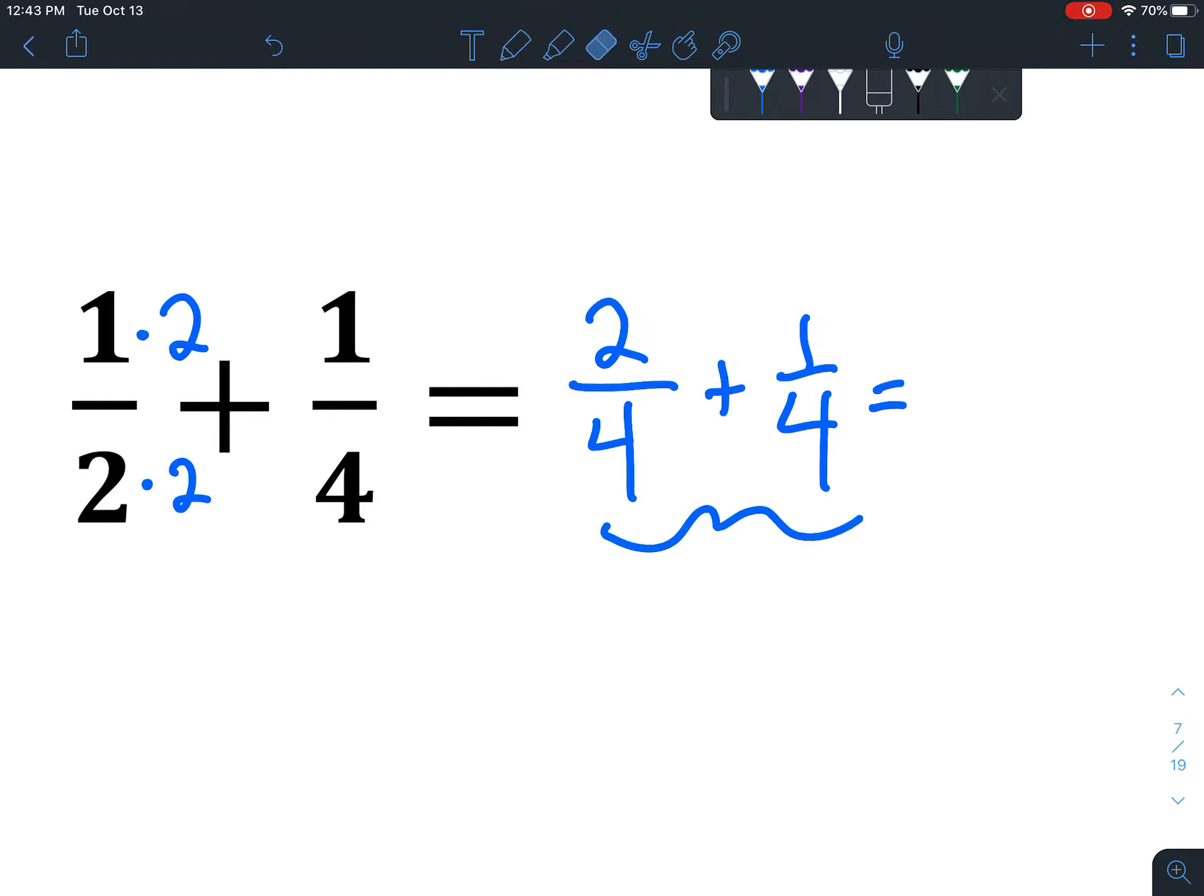Now cha-ching! We've got the same denominator, right? Which means we're ready for the next step. 2 plus 1 is 3 over 4. Now ask yourself, 3 and 4, is there any number that will divide both besides 1? And there isn't, so we're finished.